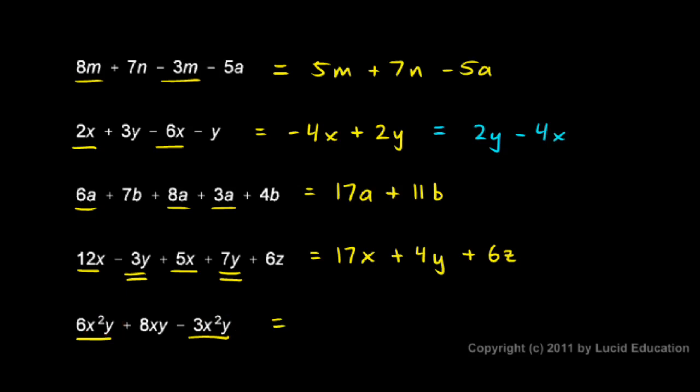So those two terms can be combined. 6x squared y minus 3x squared y is positive 3x squared y. And then I still have the plus 8xy right there. 3x squared y plus 8xy is my answer.